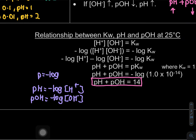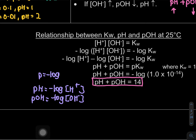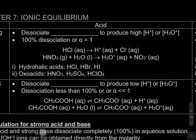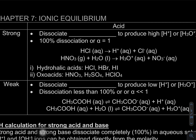Next we look at acids and bases again, but now we need to know that acid is divided into two types: strong and weak. The same goes for bases.